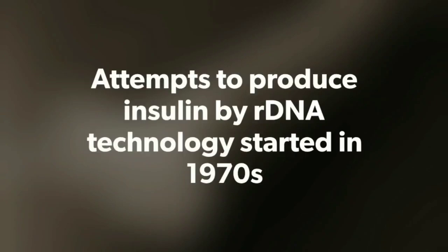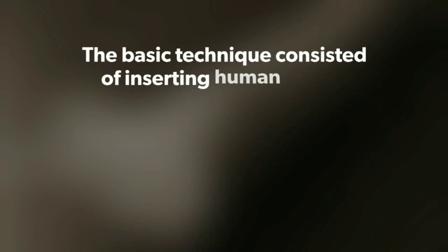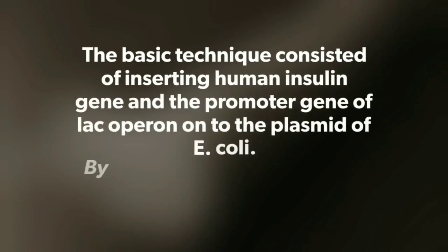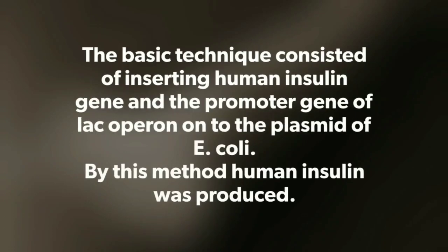Attempts to produce insulin by recombinant DNA technology started in the 1970s. The basic technique consisted of inserting the human insulin gene and the promoter gene of the lac operon onto the plasmid of E. coli. By this method, human insulin was produced.